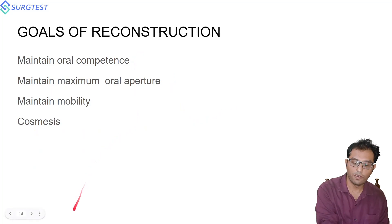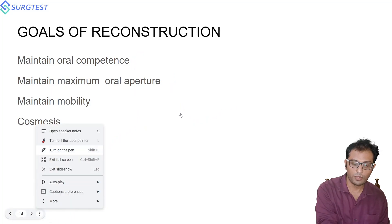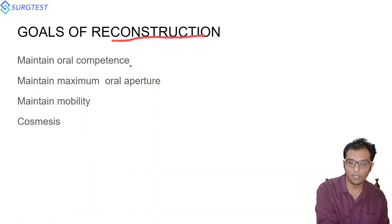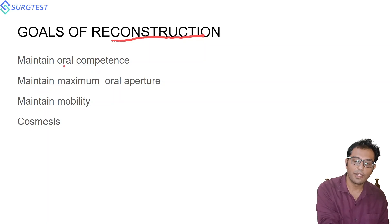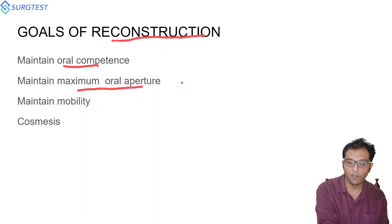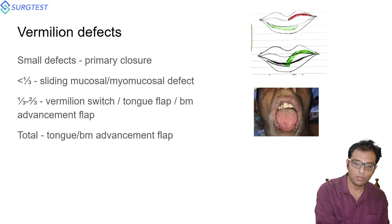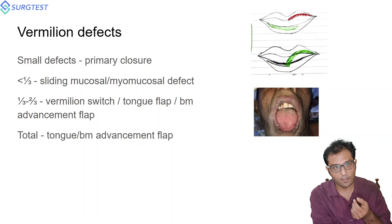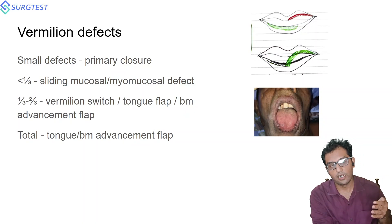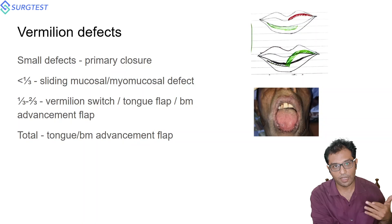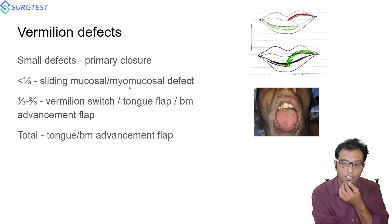Now coming to goals of reconstruction. The major goals are maintenance of oral competence, maximizing the oral aperture to avoid microstomia, maintaining the mobility of the lip, and maintaining cosmesis. We will discuss three kinds of defects: mucosal defects limited to the vermilion, full thickness lower lip defects, and full thickness upper lip defects, with an algorithm for each.